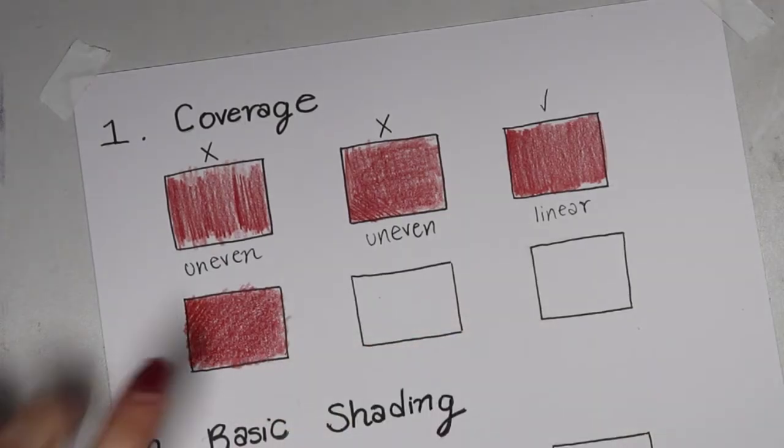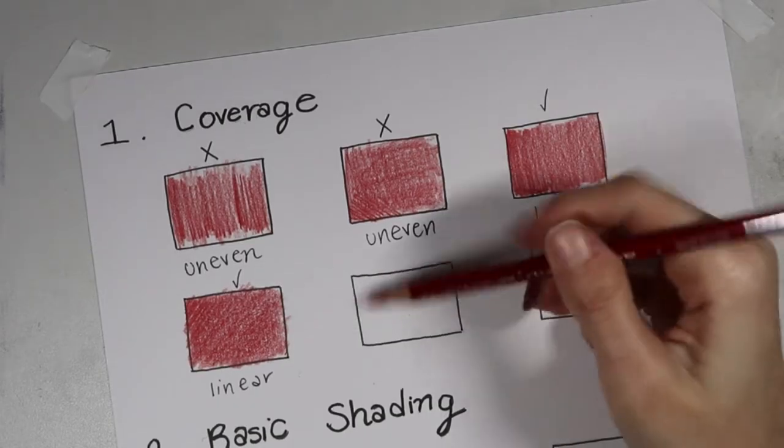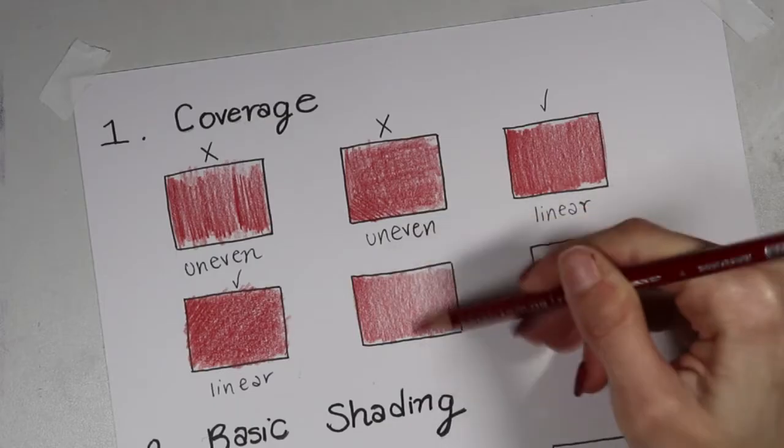Again, this is pretty good coverage here, but if you look closely, there are going to be some lines where you can tell what direction you are coloring in. All right, so in the next box, I'm actually going to shade linear in one direction, and then I'm going to add another layer on top going in a different direction.